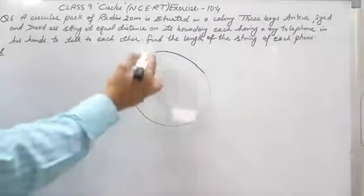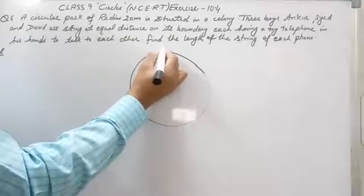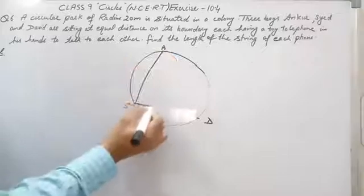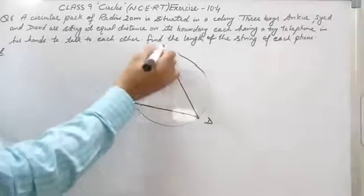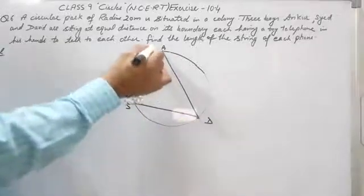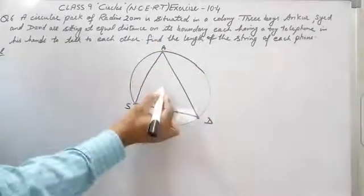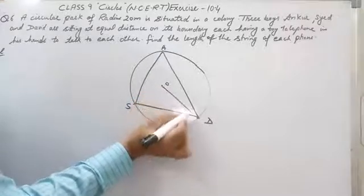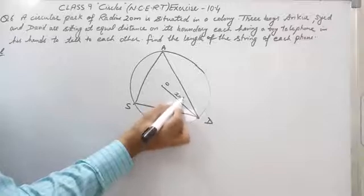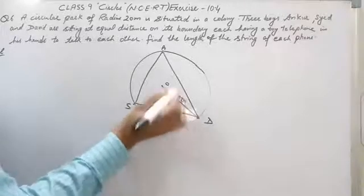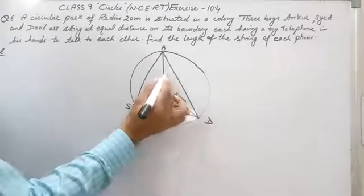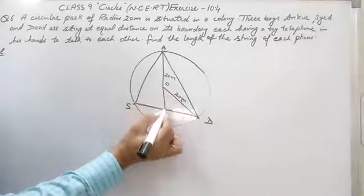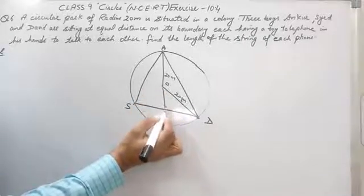So suppose this is a circular park where three boys Ankur, Sayyid, and David are sitting, and it is given that the distance between the three boys is the same. So AS equals SD equals AD, meaning ASD is an equilateral triangle. The radius of this park is 20 meters, so OD equals AO equals 20 meters. We bring down a line from A to SD and call that point P.